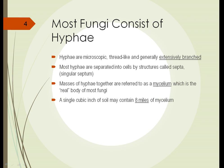Most fungi consist of something called hyphae. Hyphae are microscopic, thread-like, generally very branched structures — think of it like the trunk of a tree that branches out everywhere. Most hyphae are separated into individual cells by structures called septa, or in the singular, a septum. Masses of hyphae together are referred to as a mycelium.